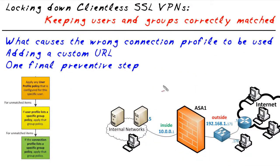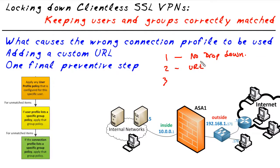To solve this problem it's really simple — we're going to do three basic things. Number one: no drop-down list — we're going to take it away so the user doesn't have the choice. Number two: we're going to give him a custom URL just for his engineering group so he can still connect. Number three: we're going to lock him down so that if he somehow gets somebody else's URL or the drop-down reappears and he picks the wrong connection profile, he will not be able to log in.